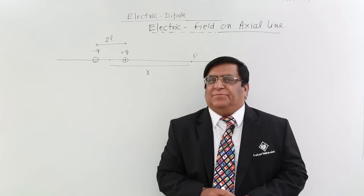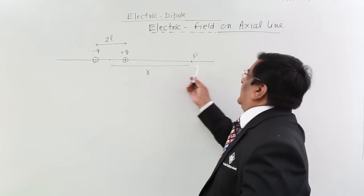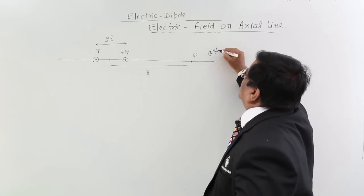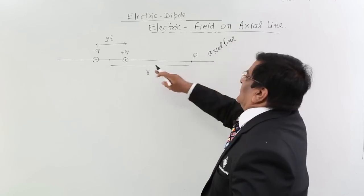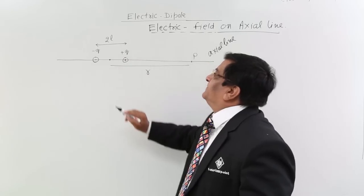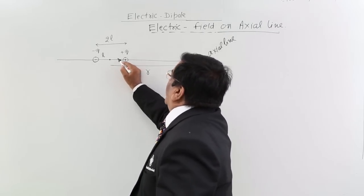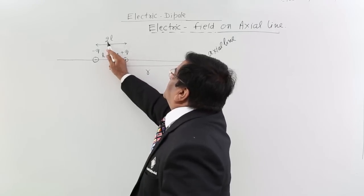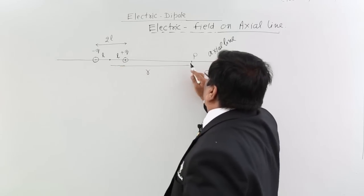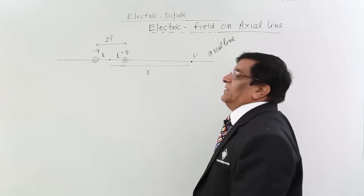We wish to calculate the electric field created by a dipole, and the position we have taken is on the axial line. The minus and plus charges, when the line through them is extended, is known as the axial line. All measurements of distance will be taken from the center. From the center, each charge is at length L, so the total length is 2L. From the center, we have taken a point at distance R, and here at point P on the axial line, we want to calculate the electric field.